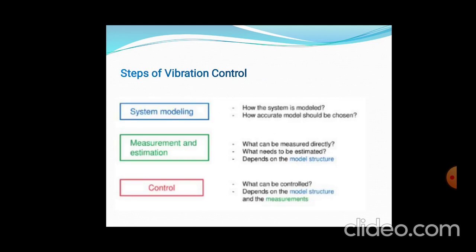These are the steps of vibration control: first, system modelling; second, measurement and estimation; and third, control. In system modelling, we consider how the system is modelled and how an accurate model should be chosen. For measurement and estimation, we decide which parameters to consider based on the model structure. Finally, control depends upon the model structure and the measurement.